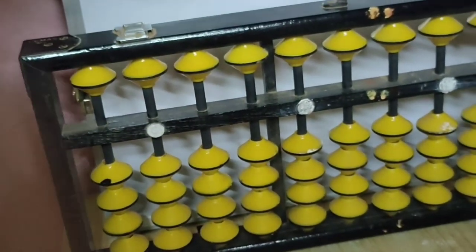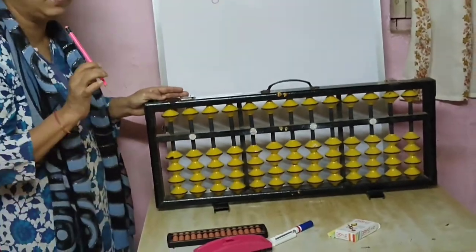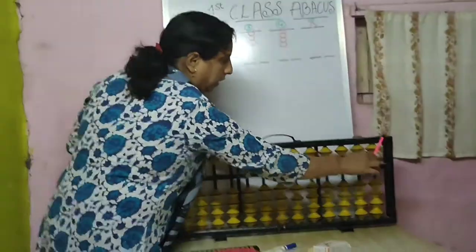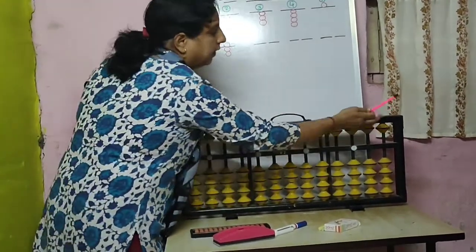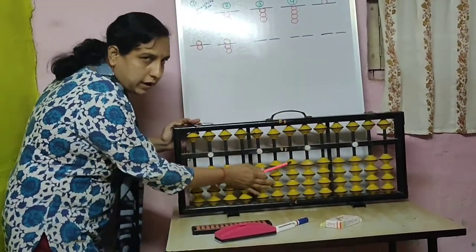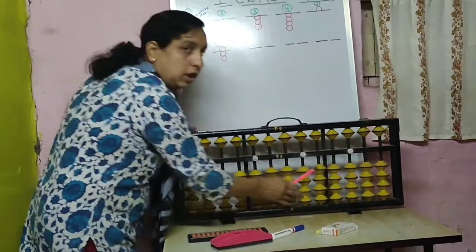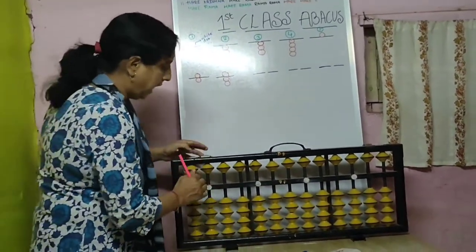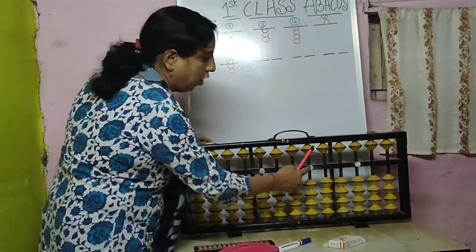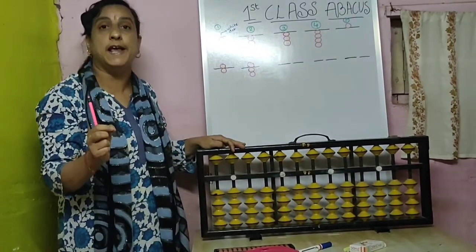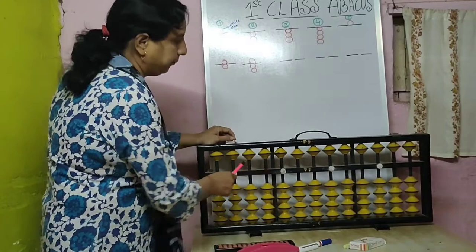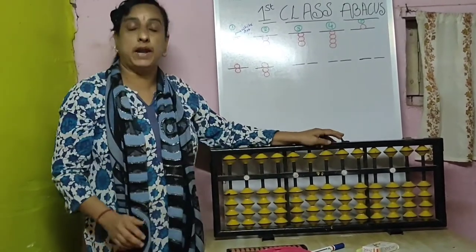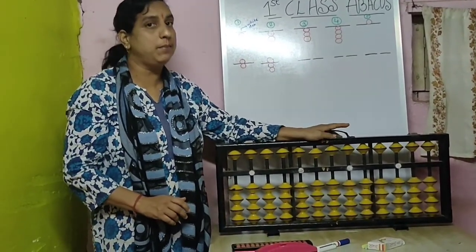So here in this big Abacus, I will explain one more time. Please remember this: frame of the Abacus, upper beads, lower beads — these are all lower beads — and home points, or unique points, it is called as unique points. So these are the rods. I hope you have practiced all these parts of the Abacus.